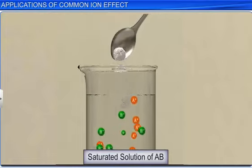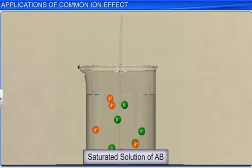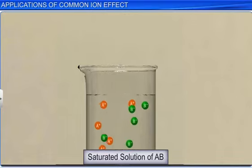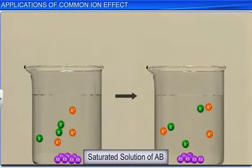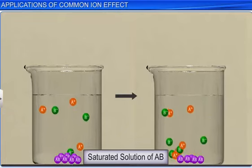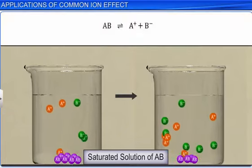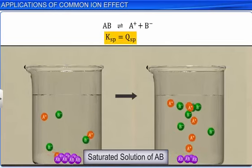You have learned that in a saturated solution, if the concentration of any one of the ions is decreased, then, as per Le Chatelier's principle, more salt dissolves, and the equilibrium shifts towards the right, till Ksp becomes equal to Qsp.